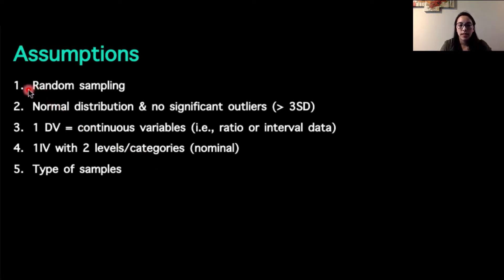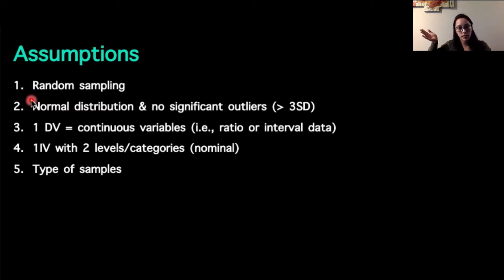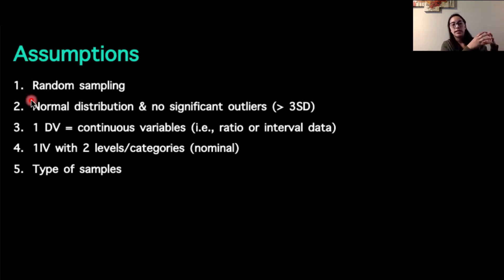Random sampling and a normal distribution with no significant outliers — this specifically applies to our dependent variable in this case. But those two are always going to be major assumptions that we have to meet for any statistical test, just because of our statistical inference concept, where we're trying to make sure that our sample is representative of our population.